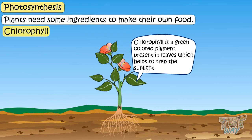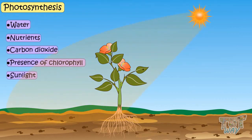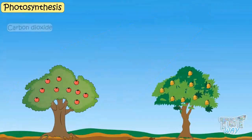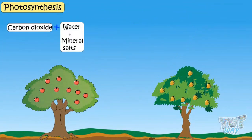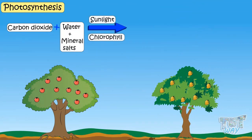So kids, these are the ingredients required by the green plants or leaves to make their food, and the process is called photosynthesis. The process is written as: carbon dioxide plus water and minerals, in the presence of sunlight and chlorophyll, forms glucose, water, and oxygen.